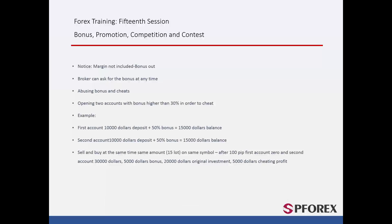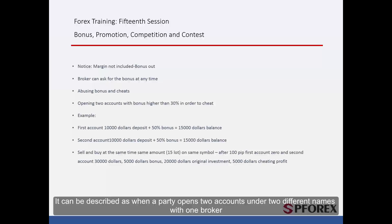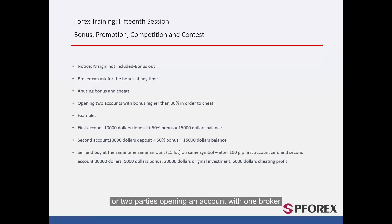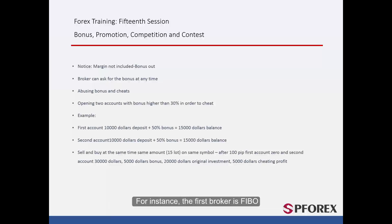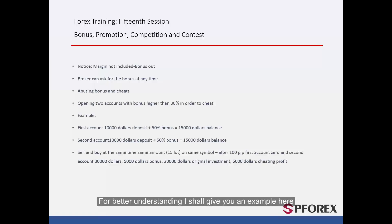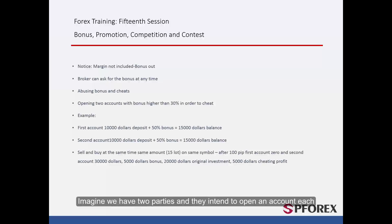Bonus abuse is a mechanism used to stop parties cheating using bonuses. It occurs when a party opens two accounts under two different names with one broker, or two parties open accounts with one broker, or two parties open accounts with two different brokers that both offer bonuses. For instance, the first broker is Fibo offering a 50% bonus, and the other is INFX also offering a 50% bonus. Here is an example to better illustrate this.